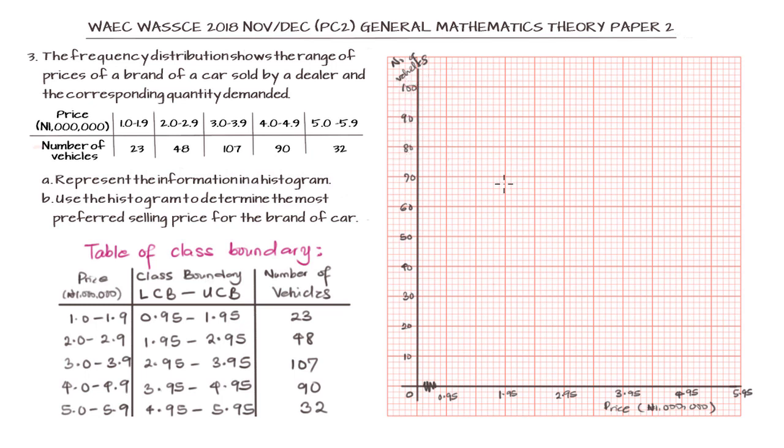What we are going to be taking is that for the number of vehicles, when we have number of vehicles in the first value, we have 23. And then the class boundary is 0.95 to 1.95. We are going to be working with the upper class boundary and the lower class boundary. So 23 will be in between here. And then we can draw from 0.95 to 1.95, that is 23.